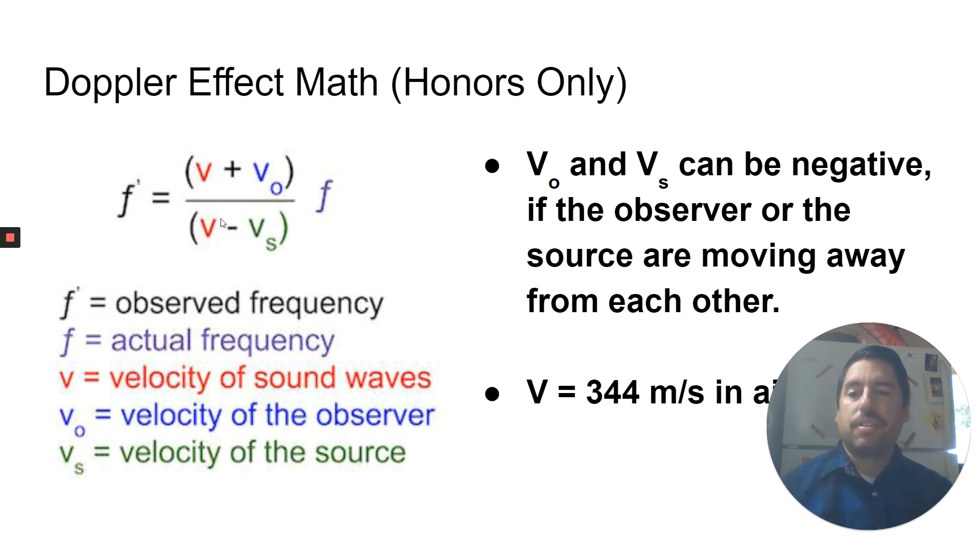V in the red is the velocity of the waves. So for all these sound things, we need the velocity of sound. And the velocity of sound in air is 344 meters per second. So we're going to plug 344 into both of those spots.